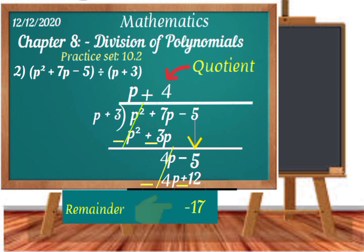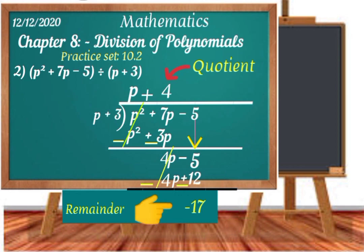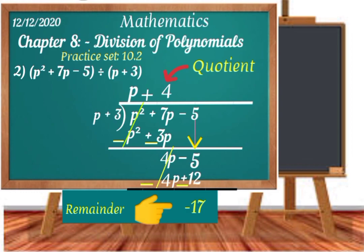So minus 17 is the remainder and p + 4 is the quotient. In this question, the quotient is p + 4 and the remainder is minus 17. In this way we have completed question number 2 of practice set 10.2.